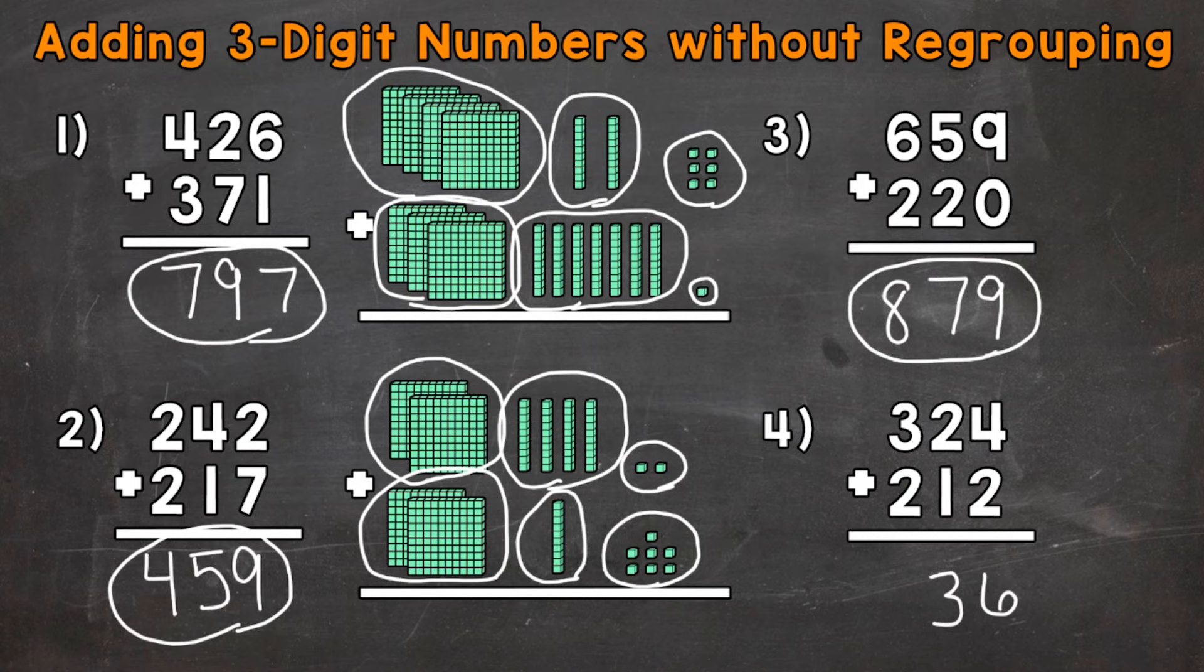And then lastly, 3 plus 2, which is actually 300 plus 200. That gives us a 5 in the hundreds place. That 5 has a value of 500. It represents 5 groups of 100. So our final answer is 536.